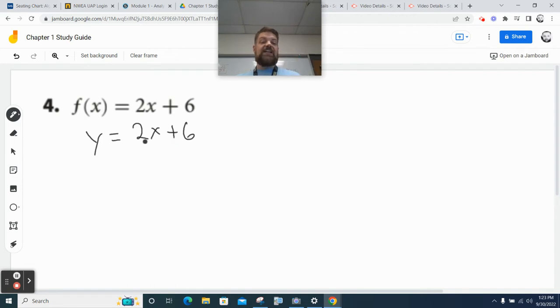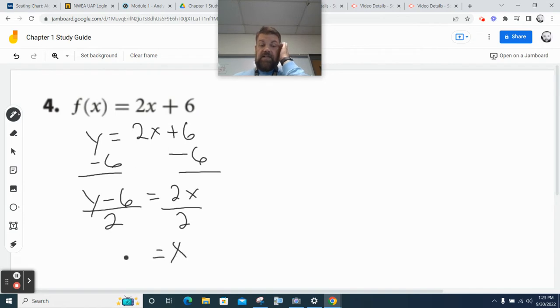So now I got to get x by itself, so I'm going to subtract 6 from both sides, and I get y minus 6 is equal to 2x. I divide by 2. Whatever I do on one side, I do to the other, and I get x equals y minus 6.